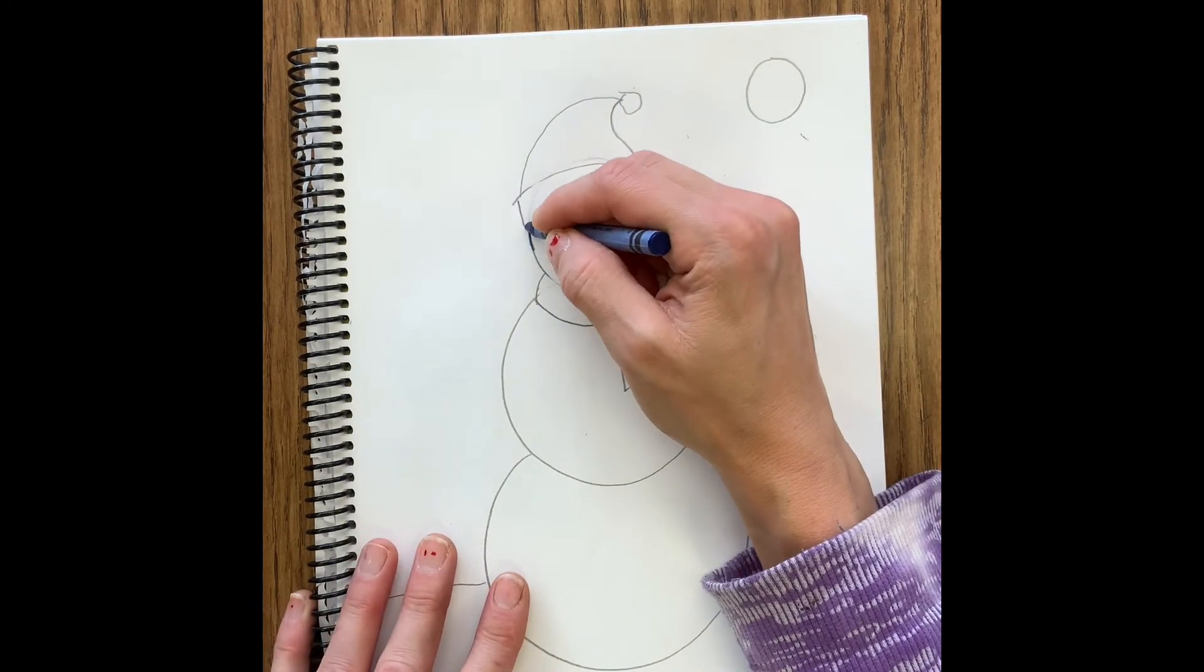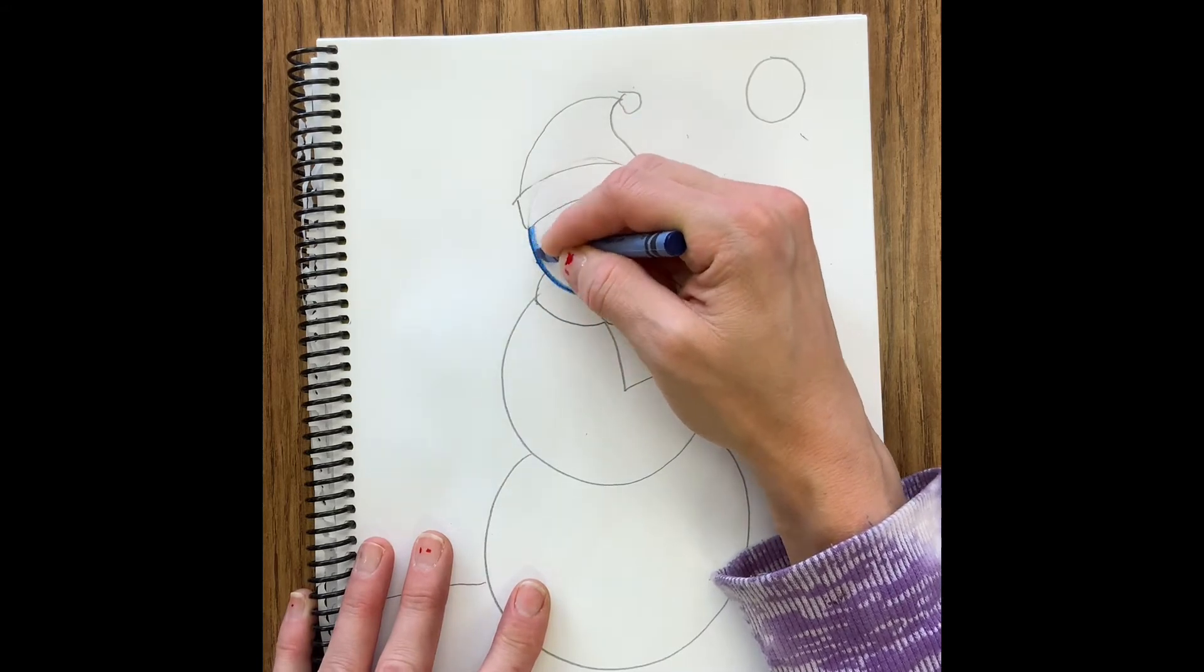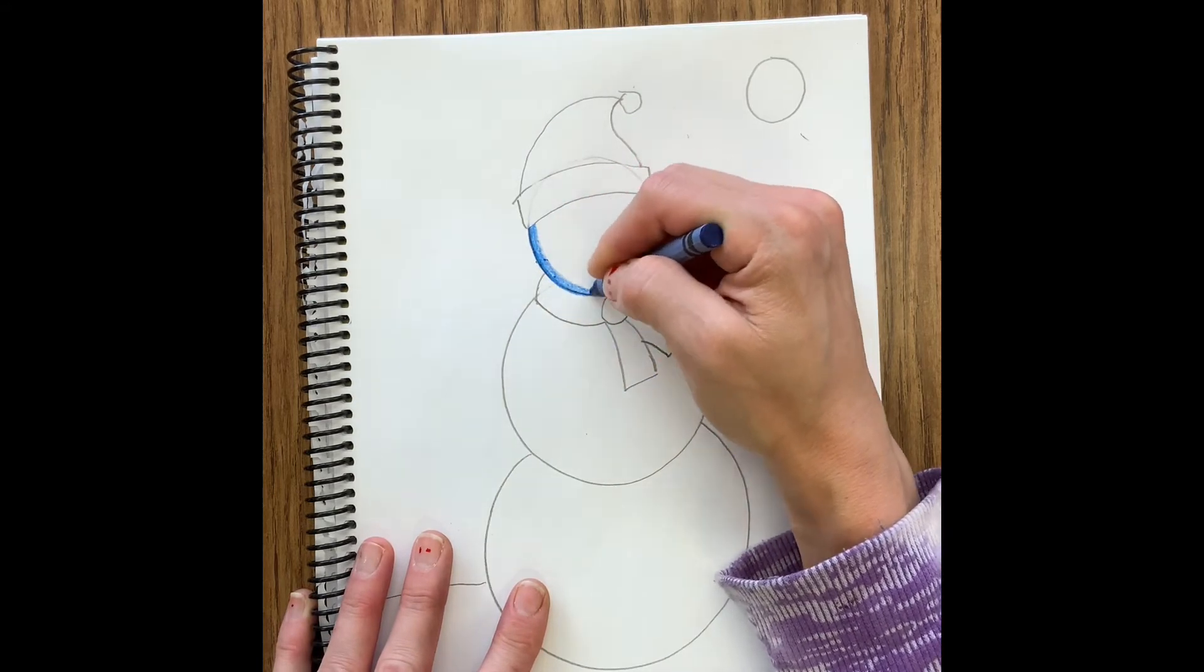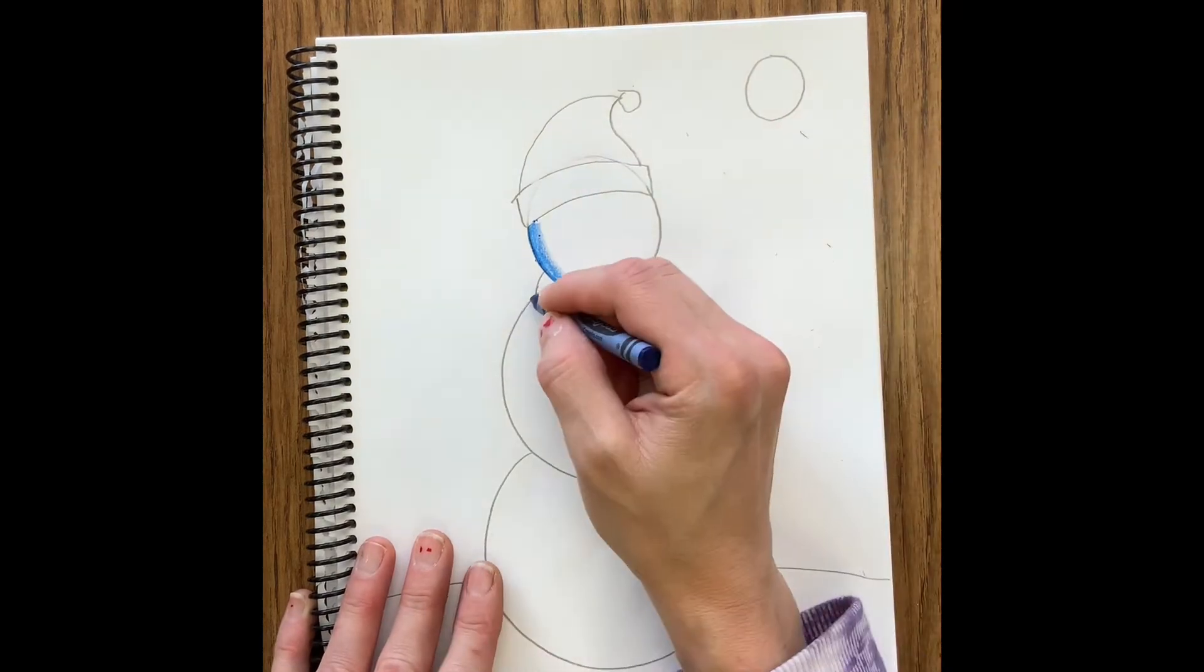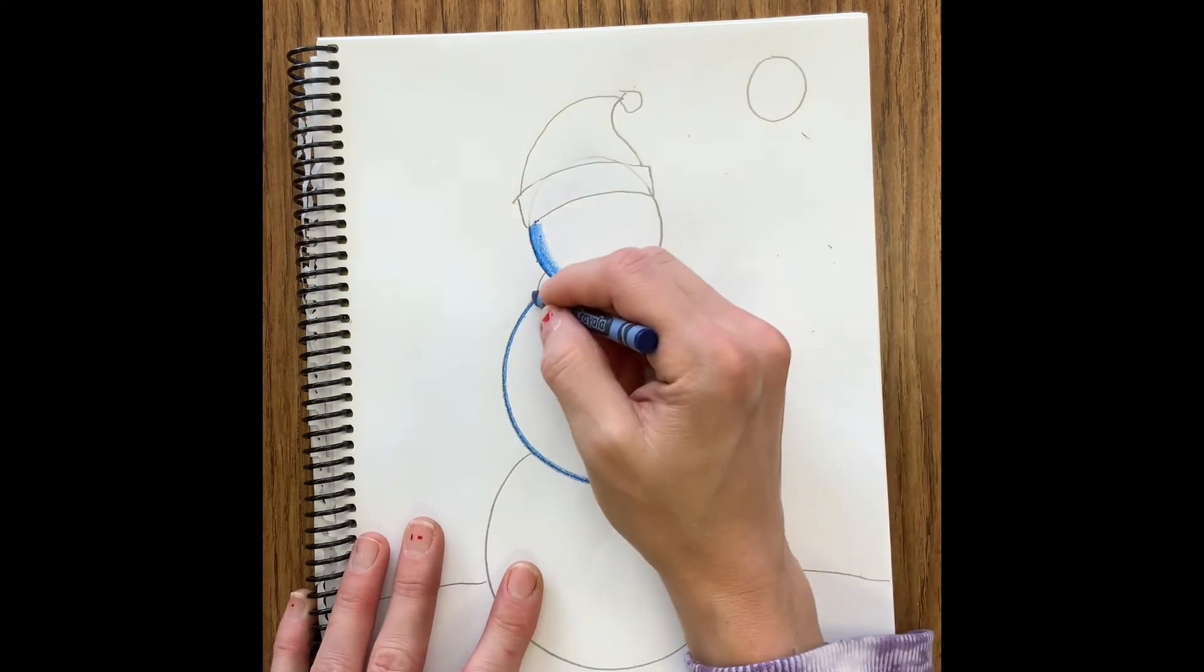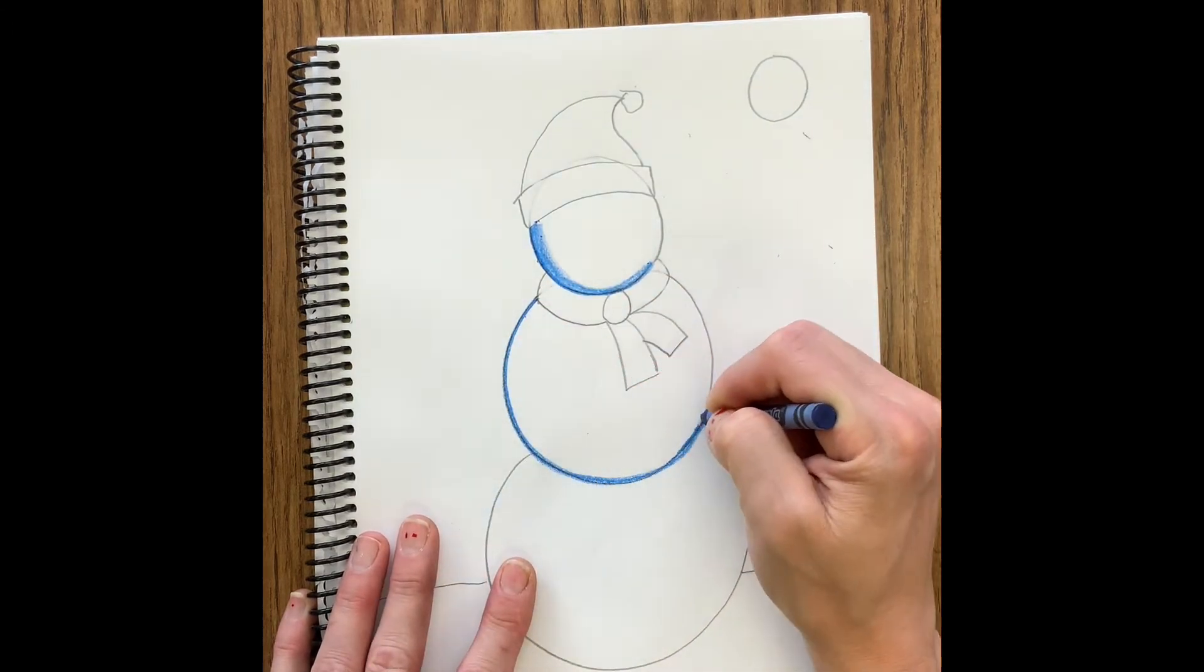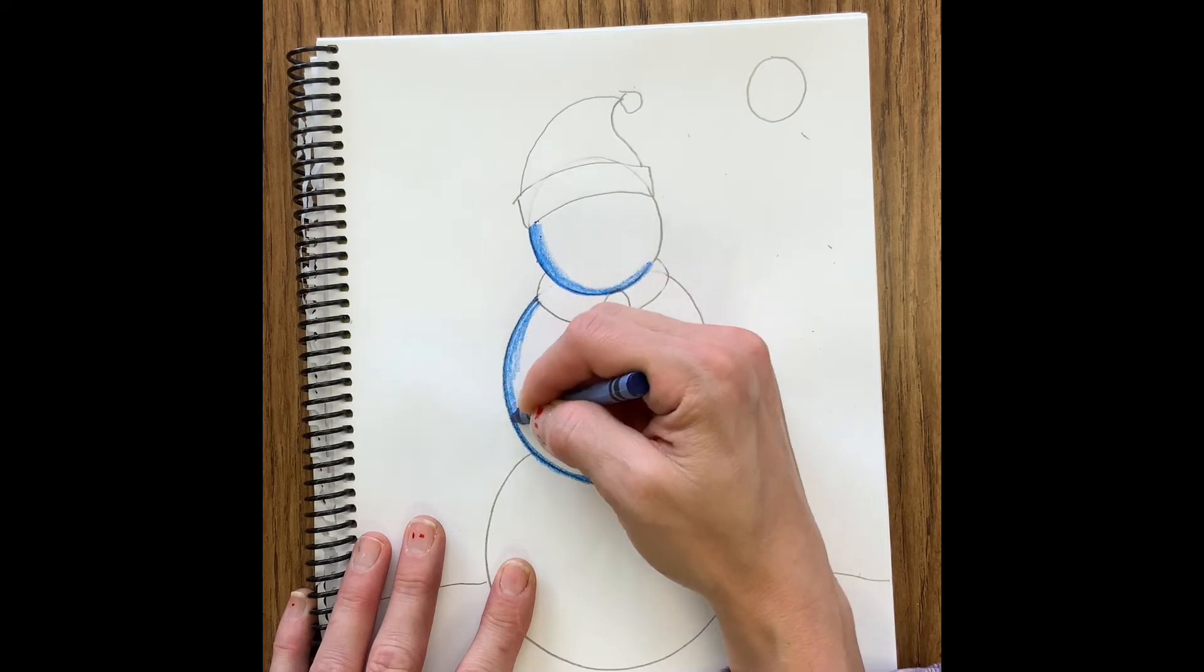Now we are going to add in the color. I'm going to start with my blue, that's my darkest color. I am going to start coloring on the curve that is opposite of my moon. So if you notice my moon is in the top right corner of my picture, so I am starting on the bottom left of each of the snowballs that make the body of my snowman.